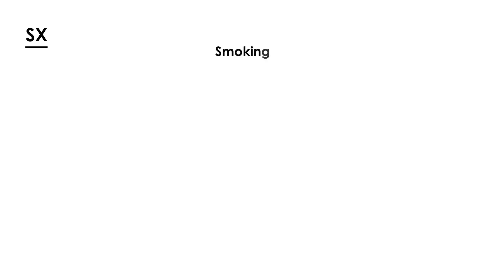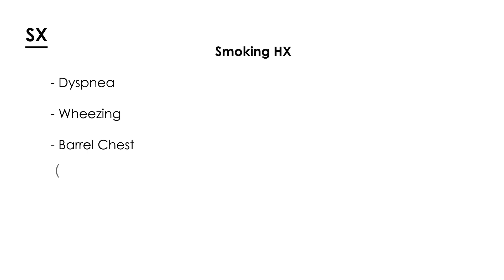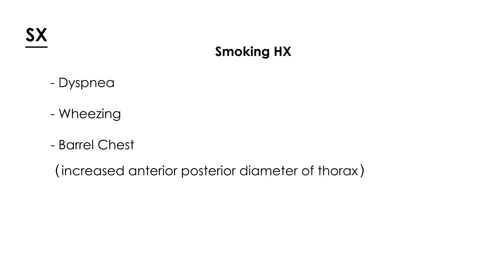In terms of symptoms, a clinical vignette will almost always include a smoking history. Symptoms include difficulty breathing and wheezing. On physical exam, a barrel chest — essentially an increased anterior-posterior diameter of the thorax — is characteristic. A productive cough is often found if there is a strong bronchitis component to the COPD.